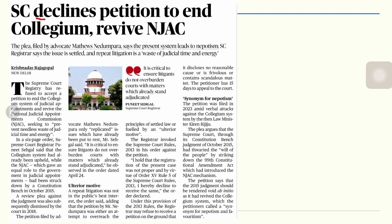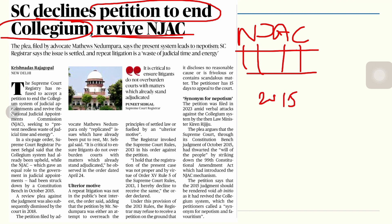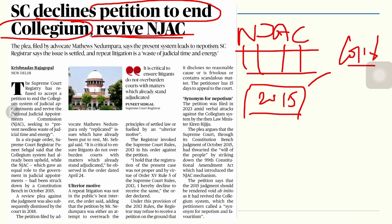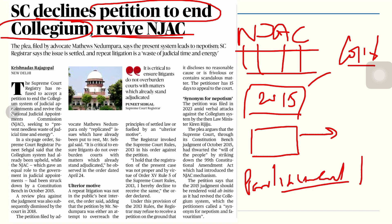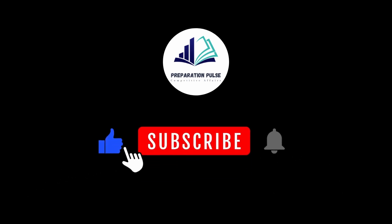The final topic is the Supreme Court declining a petition to end the collegium system and revive the NJAC — the National Judicial Appointments Commission. The NJAC was introduced in 2015 to reduce problems of the collegium system, where judges were selecting judges themselves. Parliament had envisaged a committee for transparent judge selection, but the Supreme Court's constitution bench in 2015 struck it down as ultra vires. The Supreme Court has again refused to revive the NJAC and declined to end the collegium system.